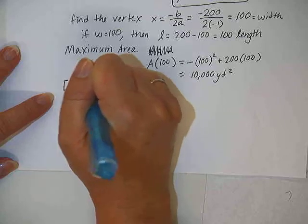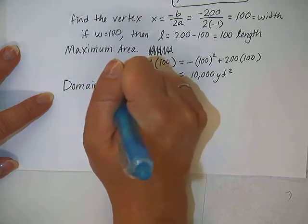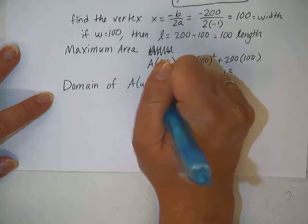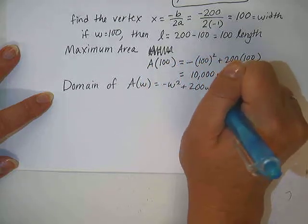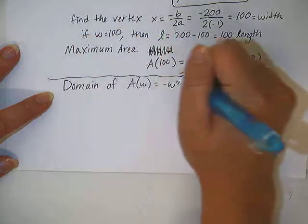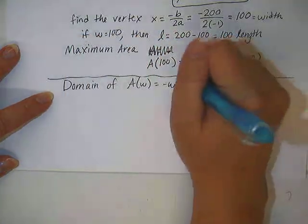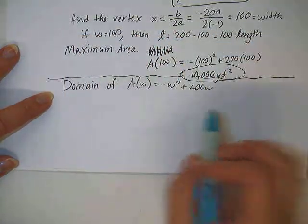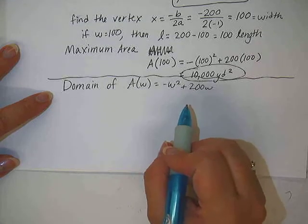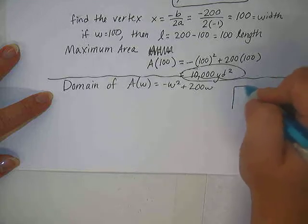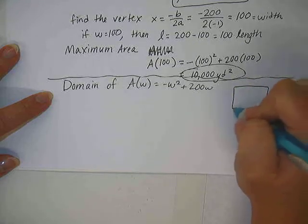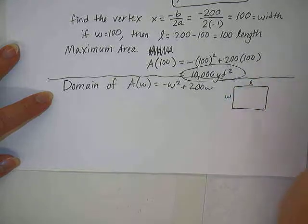Now let's verify this answer by using a graphing utility. The easiest thing to do first to make sure our graph is appropriate is to find the domain. So let's go ahead and find the domain for our function. Remember our function is negative w squared plus 200w.